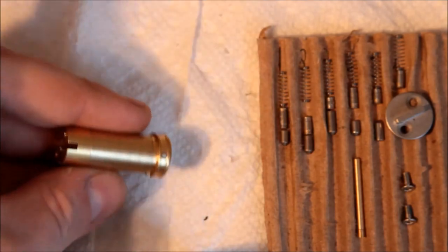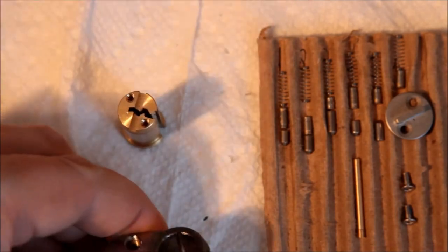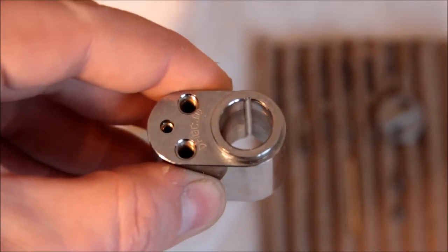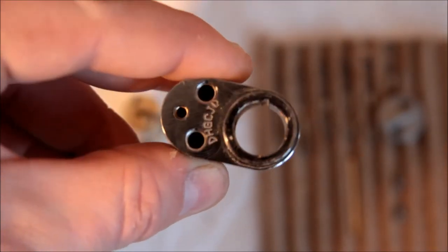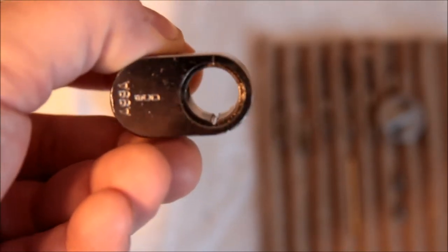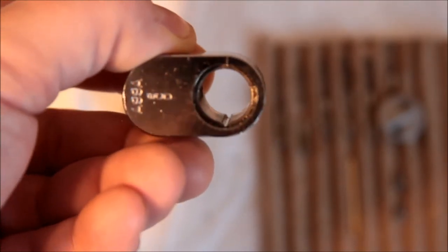Now one, the first thing I'm noting is that the plug or the shell has a milling for a sidebar. This lock does not have a sidebar, it's just a pin tumbler lock, but apparently they use the same milling for some of their other fancier locks.